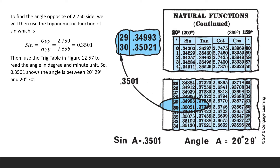Then we go to the natural function table, which is your trig table, because we can read the measurement of angles from it by using the ratios. The value 0.3501 lies between 0.34993 and 0.35021, so the angle is between 20 degrees 29 minutes and 20 degrees 30 minutes. You can also do interpolation by finding where 0.3501 lies closer to, dividing to find the midpoint, and rounding to the nearest minute.